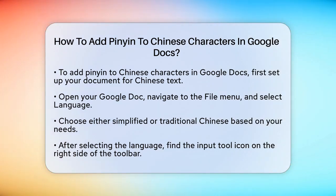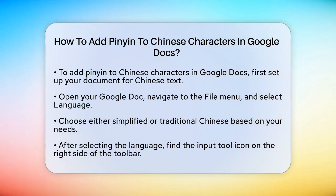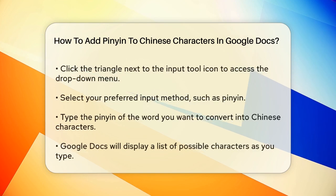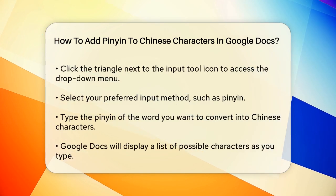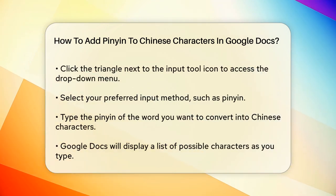Once you've selected the language, you'll see an Input Tool icon on the right side of your toolbar. Click on the tiny triangle next to this icon to open the drop-down menu. From here, you can select the input method you prefer, such as pinyin.